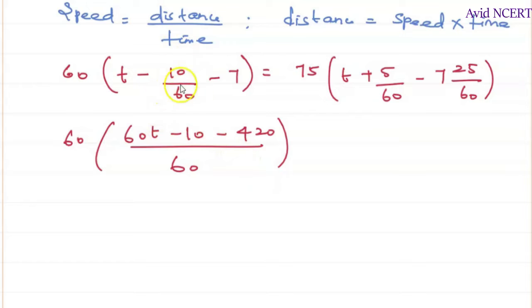Here, 60 into t is 60t minus 10 minus 7 into 60 is 420. We are not simplifying this because we have 60 here, so we can simply cancel it later. And here again, it is 75 times, 60 is the LCM.